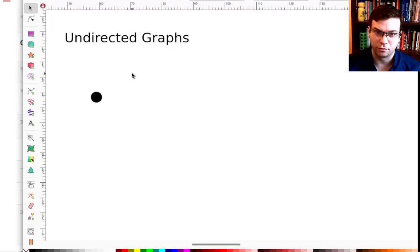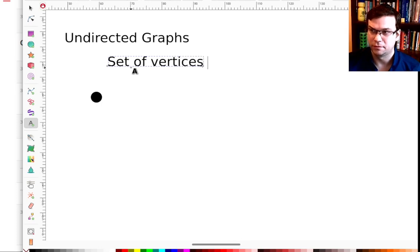Let me start with a kind of graph called an undirected graph. An undirected graph is a set of vertices, which is analogous to a node in a tree, and edges that connect them.